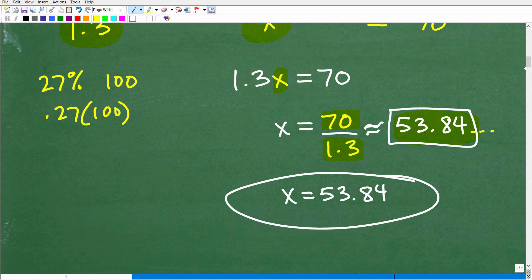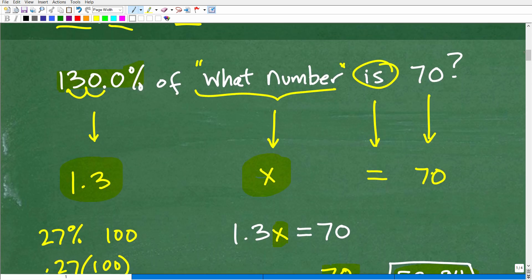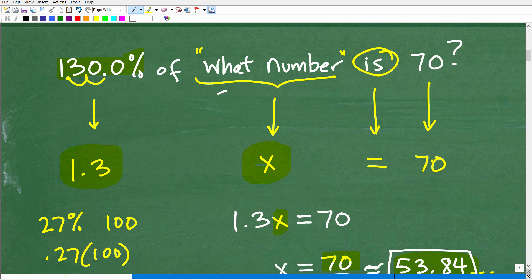Okay, so that is the answer. All right, so let's go up here. 130% of 53. Okay, what was that number again? 53.84 is 70. Now, let's go ahead and check this. All right, we're going to do this two ways.